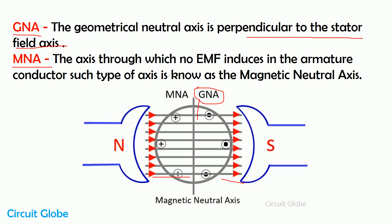The axis where no EMF is induced in the armature conductor is known as the magnetic neutral axis. And as there is no EMF induced in that line, we place our brushes and commutator in that axis. Here you can see this is the magnetic neutral axis of the DC machine — brushes are safe and not getting damaged because there is no EMF in that axis.